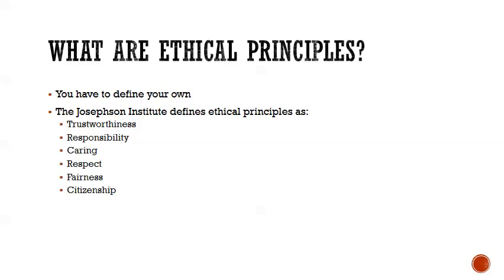More broadly, what are ethical principles? You have to really define your own ethical principles. We have some that are designated for the profession, but when it comes right down to it, you have to have your own set of moral values. The Josephson Institute, for example, has a set of ethical principles — not for business specifically, just generally speaking. They include trustworthiness, responsibility, caring, respect, fairness, and citizenship. Just an example of a set of ethical principles that exist.